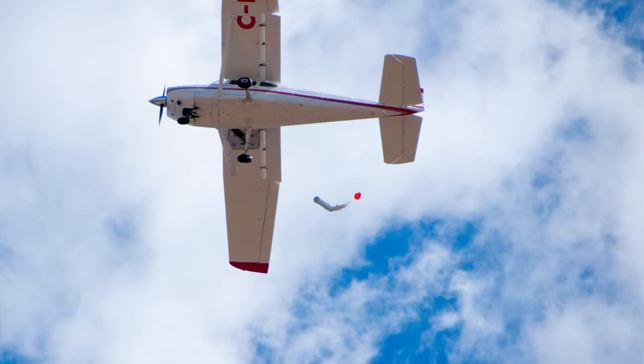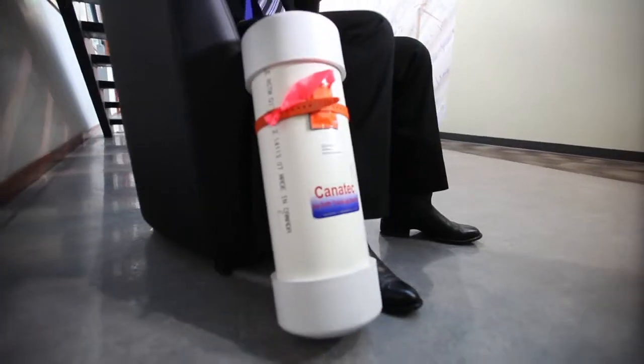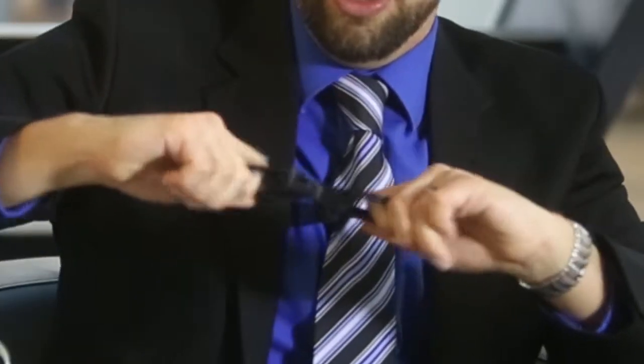When it comes out of the airplane after it lands on the ice, you have to get the parachute off or else it could drag the whole beacon. Before we had been using these pyrotechnic cutters. We wanted to get away from explosive anything and just get to a purely mechanical release.